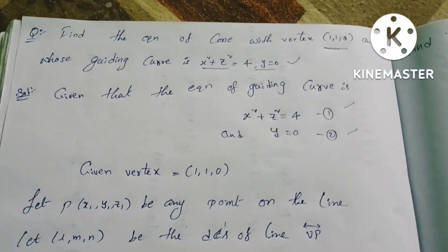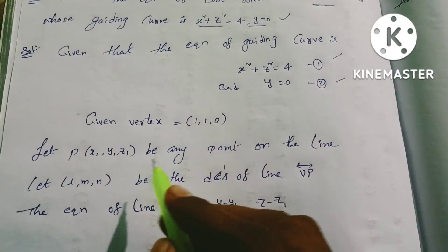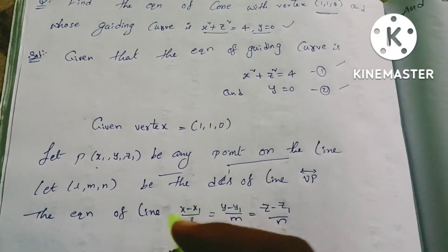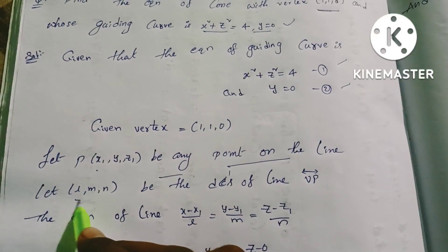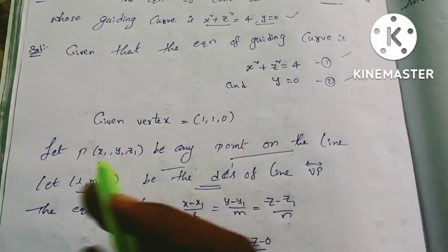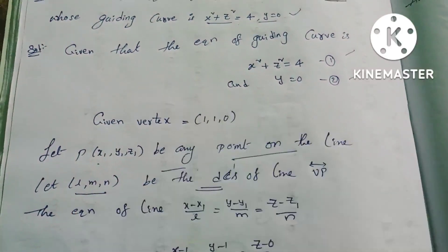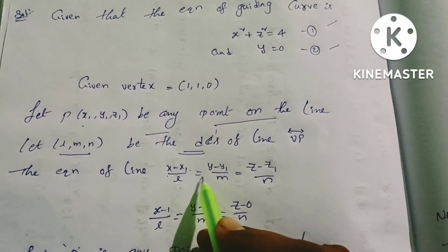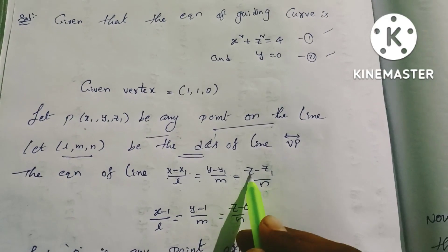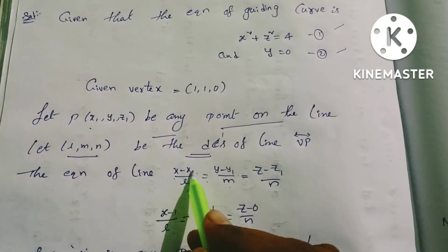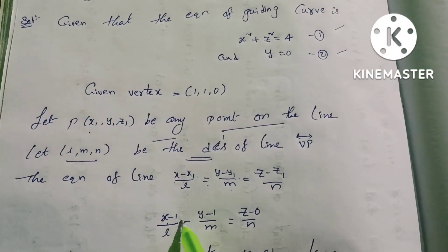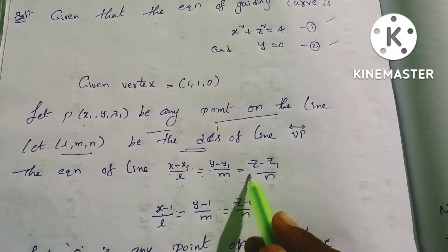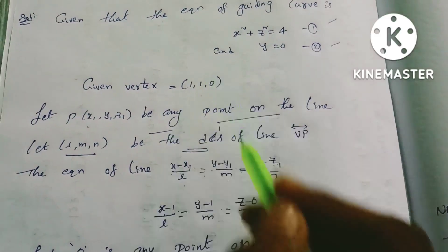Let P be any point on the line. Let P be the point of the line, and L, M, N be the direction cosines of the line. So we have the line equation: (x - x1)/L = (y - y1)/M = (z - z1)/N.